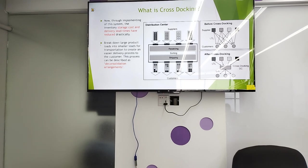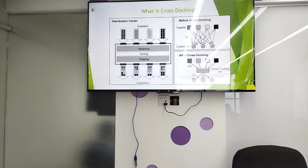De-consolidation arrangement involves receiving, sorting, and shipping. The distribution center receives from suppliers, then sorts and ships to customers. Before cross docking, the process was complex; after cross docking, it is much simpler.